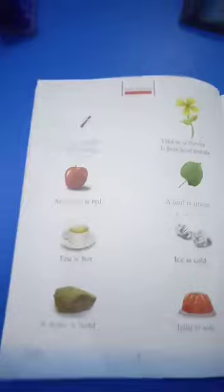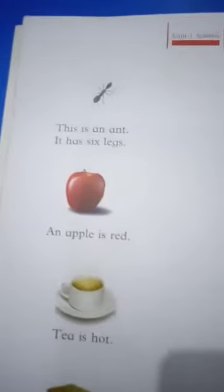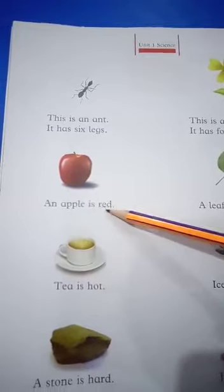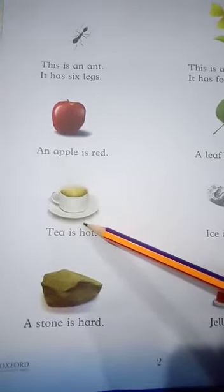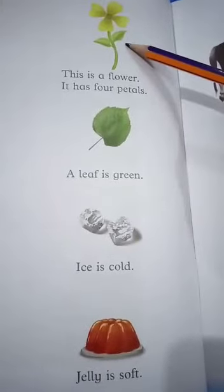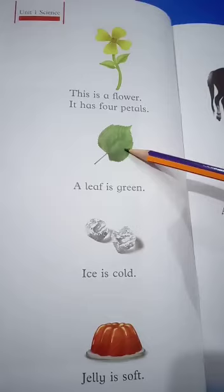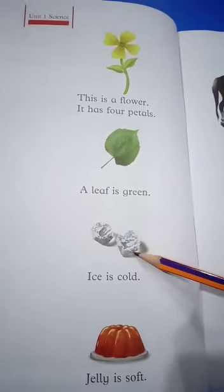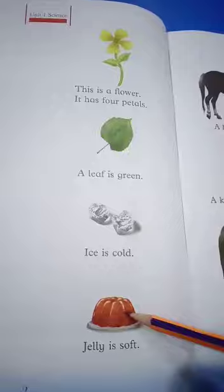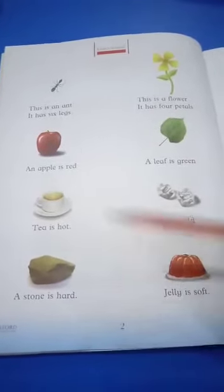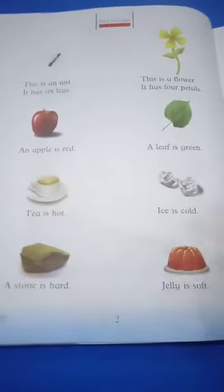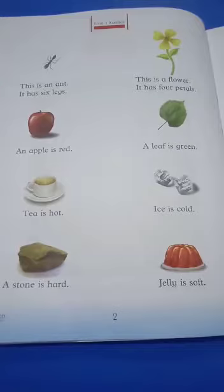For example, we have information about body parts — this is an ant and it has six legs. This is an apple. This is a cup of tea — the tea is hot. This is a stone which is hard. This is a flower which has four petals. This is a leaf which is green in color. This is ice which is cold. Jelly is soft. So we find out information about body parts, colors, and the physical state of objects. This way of finding things out is called science.